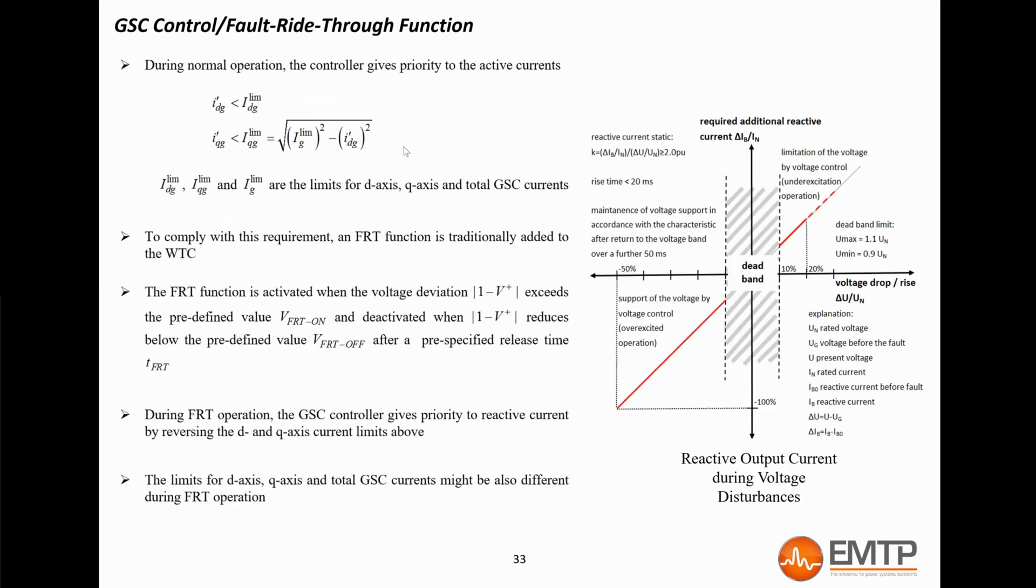Let's now explain the limiter device of the grid-side converter. During normal operation, the controller gives priority to the d-axis current, which corresponds to the active power. The wind turbines are equipped with a FRT function to fulfill the grid code requirement regarding voltage support. The FRT function is activated when the voltage deviation is above a user-defined threshold and is deactivated when the deviation goes back below a reset threshold. When the FRT function is active, the grid-side controller gives priority to the reactive power current.